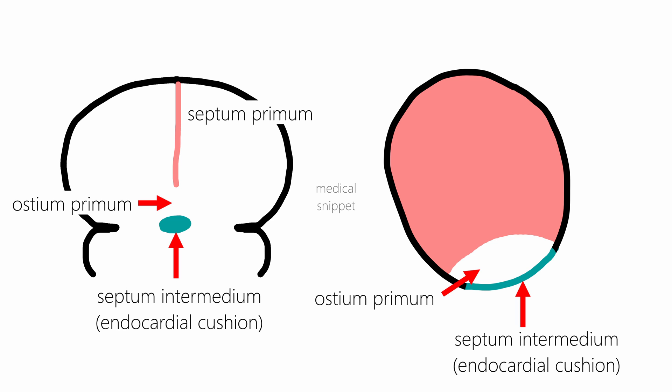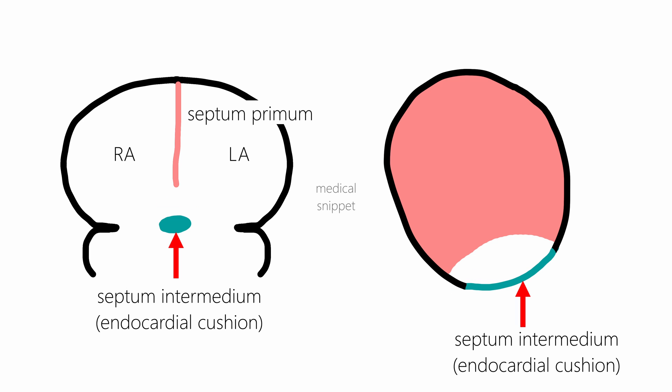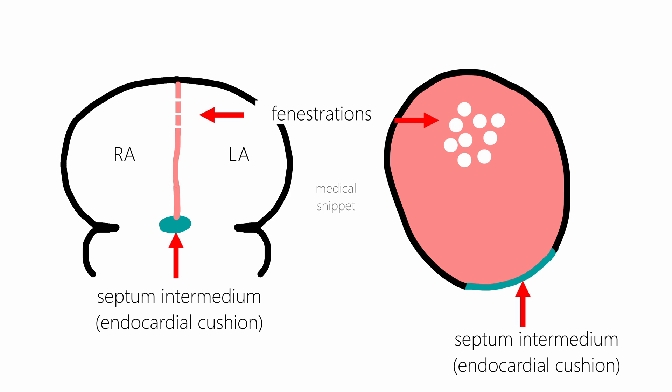This ostium primum maintains the right to left flow of blood in the fetal heart, which is essential for fetal life as discussed in the fetal circulation video. As the septum primum fuses with the septum intermedium, the upper part of the septum primum undergoes apoptosis and develops fenestrations. These fenestrations join to form the second opening in the septum primum called the ostium secundum. This opening is essential for the right to left shunt.